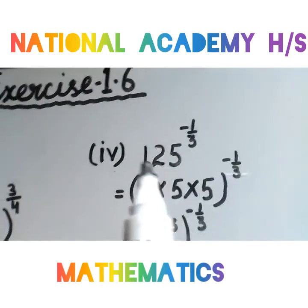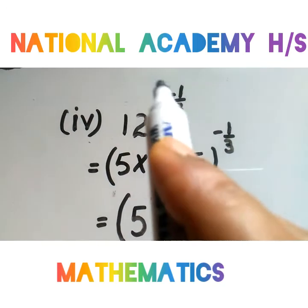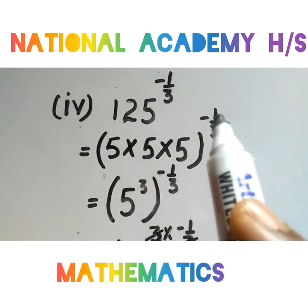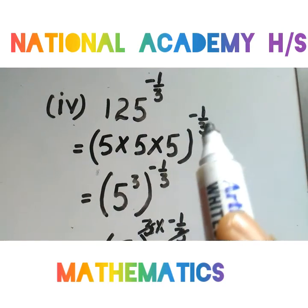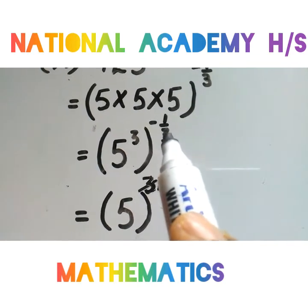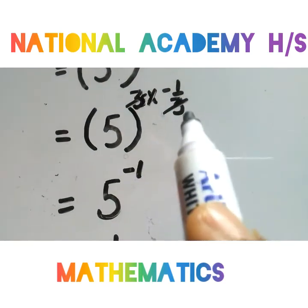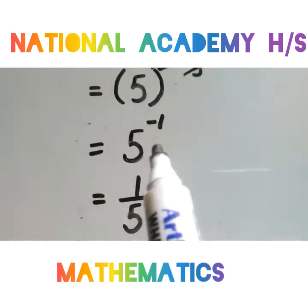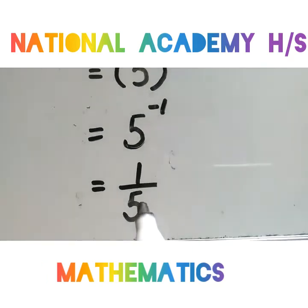4th part है 125 whole power minus 1 by 3। Negative power में ध्यान रखना है कि power में ही लिखें, multiply में नहीं। 125 = 5 into 5 into 5 — 5 three times क्योंकि denominator 3 है। तो 5 की power 3, whole power minus 1 by 3 — 3 into minus 1 by 3, 3 और 3 cancel, 5 की power minus 1। Negative power का reciprocal: answer है 1 upon 5।